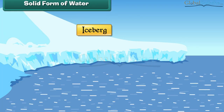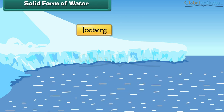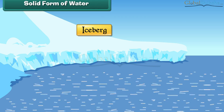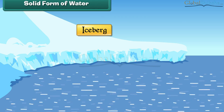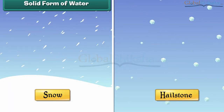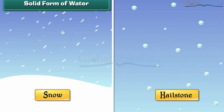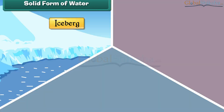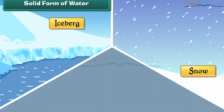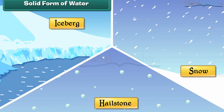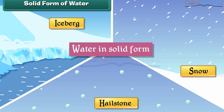Icebergs are huge pieces of ice found in seas and oceans at very cold places. Snow and hailstones are small pieces of ice. Icebergs, snow, and hailstones are also examples of water in solid form. However, they are naturally formed.